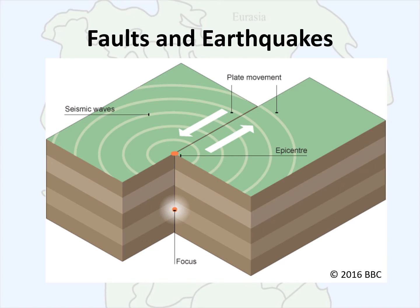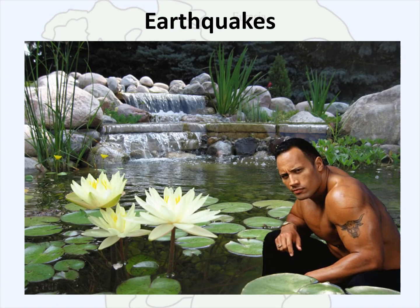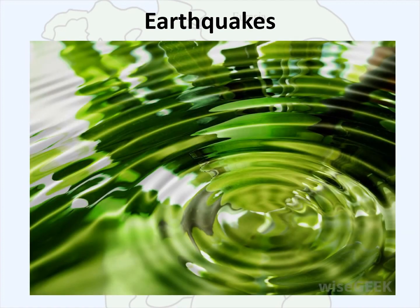Depending on the depth of the earthquake, the depth of the focus, and the amount of displacement of that rock material, earthquakes release energy in the form of a seismic wave. The movement of a seismic wave is similar to dropping a rock in a still pond — ripples radiate outward from that central point of disturbance and energy is displaced through this wave motion.